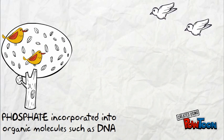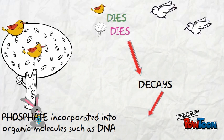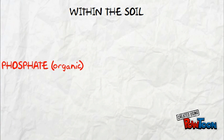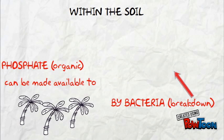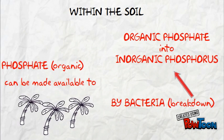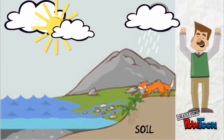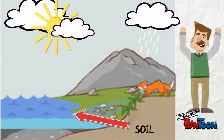When the plant or animal dies, it decays and the organic phosphate is returned to the soil. Within the soil, organic forms of phosphate can be made available to plants by bacteria that break down organic matter to inorganic forms of phosphorus. This process is known as mineralization.